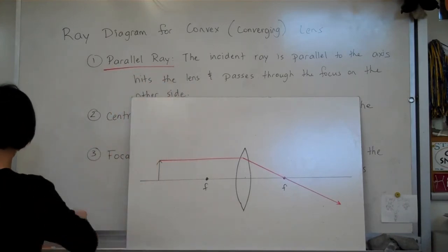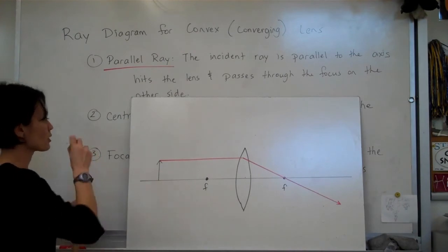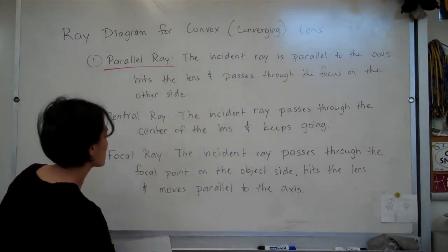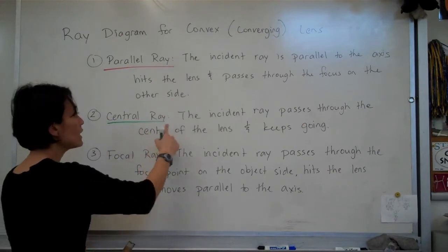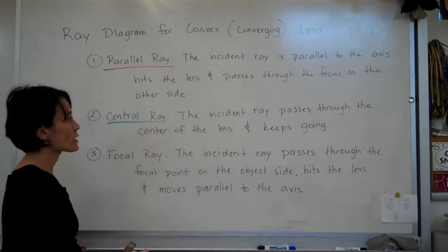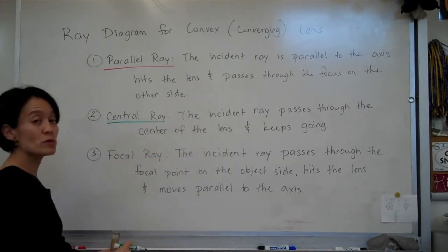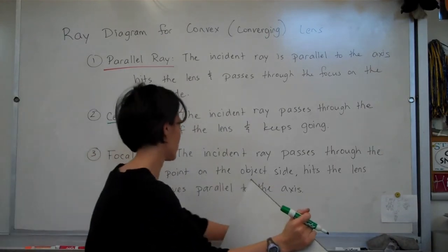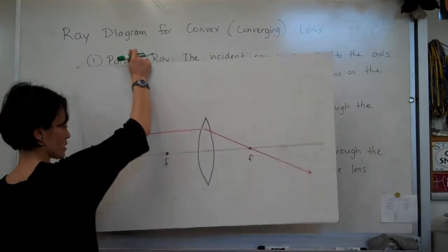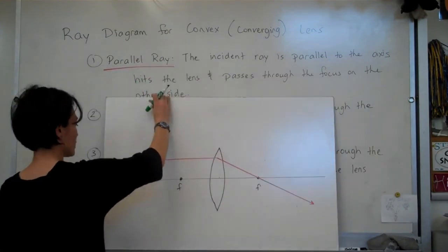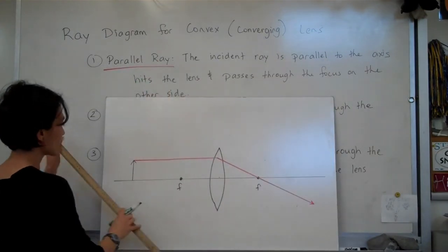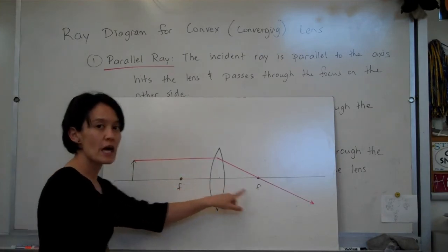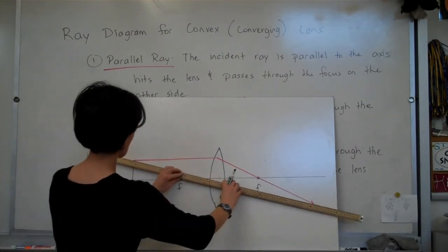The second ray is the central ray. The incident ray passes through the center of the lens and keeps on going — this is actually the easiest ray to draw. You're just going to line up the top of your object to the center of your lens and then keep on extending that line.